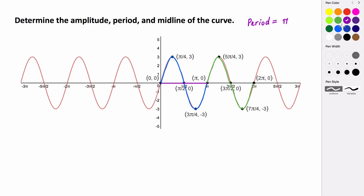Now let's talk about the amplitude. The amplitude is just the height of our graph — the distance between the midline and the maximum, or the midline and the minimum of our graph. In this case, the midline is the x-axis, which has an equation of y equals zero. The distance from the midline to our maximum is 3 units, so the amplitude is 3.